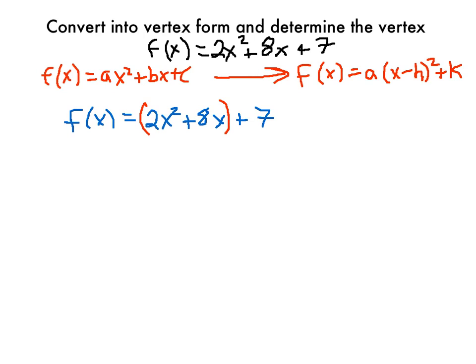And now instead of dividing both sides by 2, I'm just going to take a 2 out of both of here to get the x squared term by itself. So when I do that, I get 2, and this will be x squared plus 4x plus 7.